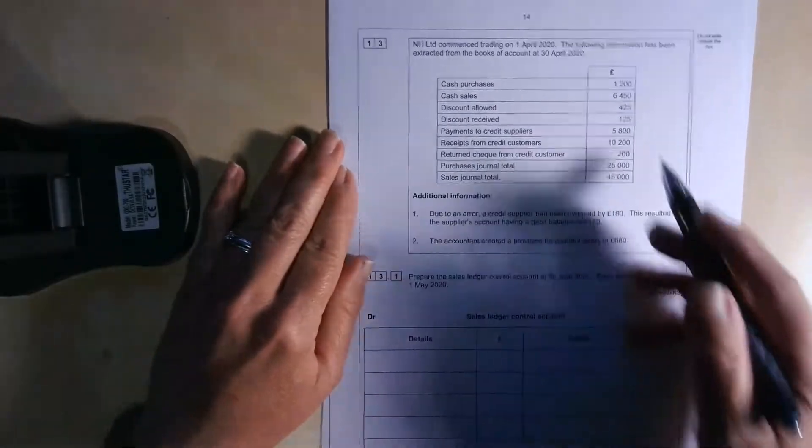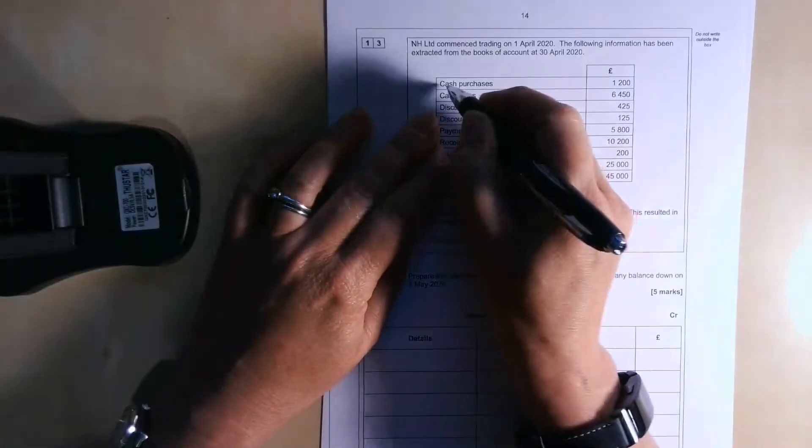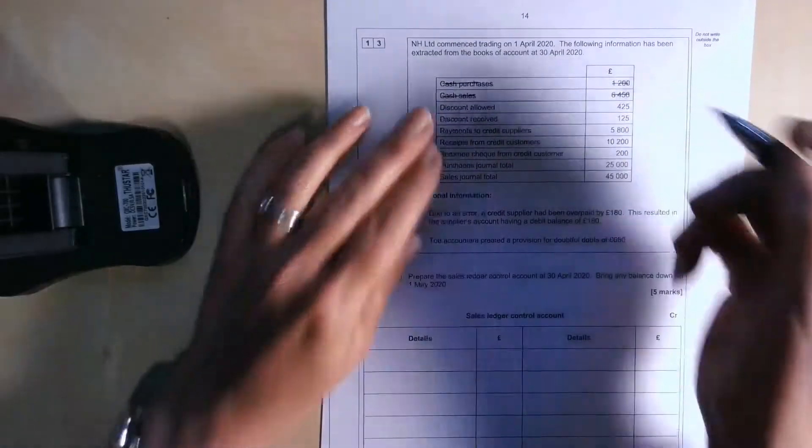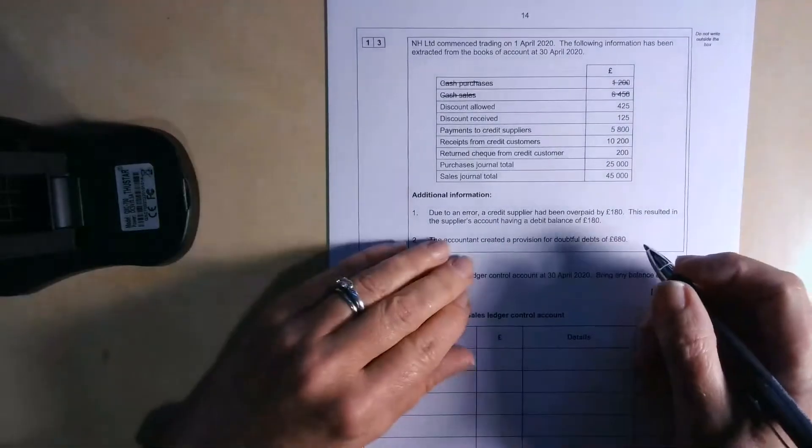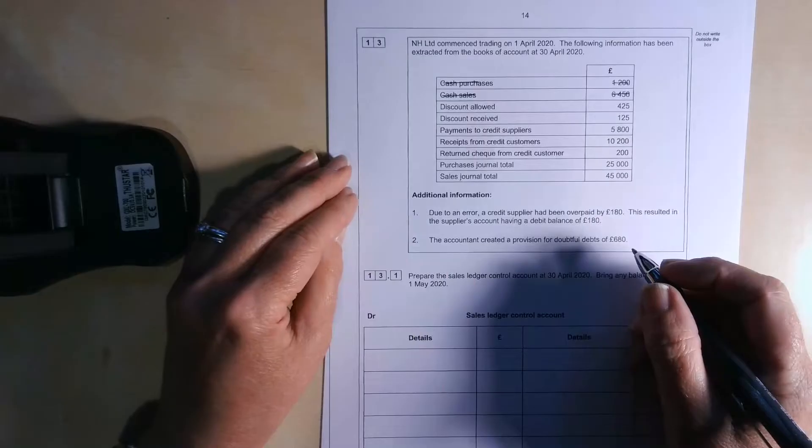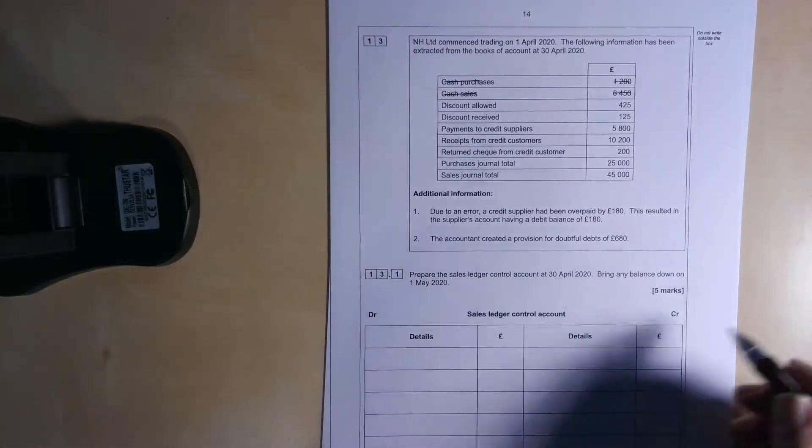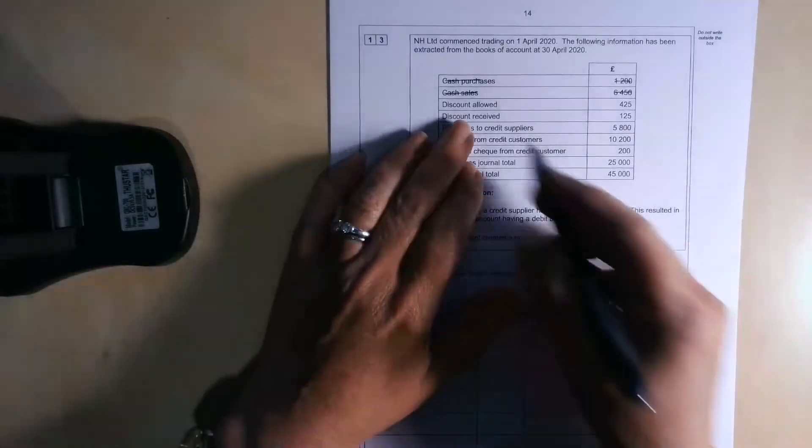So we'll just go through it together. So cash purchases and cash sales. And if you remember, if we're doing a control account, they have no place in a control account, either a sales ledger control account or a purchase ledger control account. They don't belong there. Now what we need to do is work through this list and work out which of these are going to go in the sales ledger, and which of these are to do with the purchases ledger.